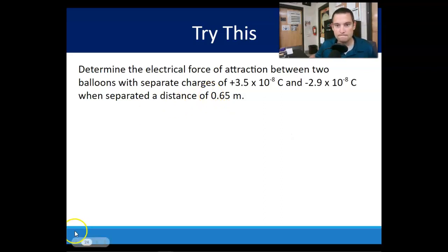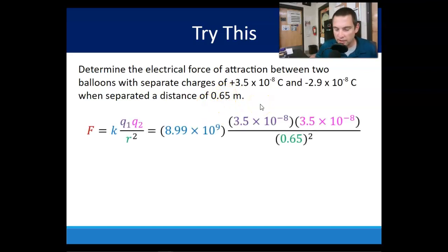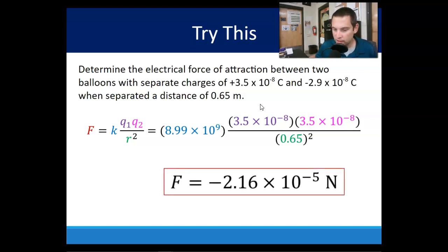Here we go. Pause this video, try this. Determine the electrical force of attraction between two balloons with separate charges of 3.5 times 10 to the negative 8th coulombs and negative 2.9 times 10 to the negative 8th coulombs when separated at a distance of 0.65. First things first, I see this as a positive and a negative, so I'm expecting a negative force because they're going to be attracted to each other. We have a separation distance of 0.65 meters, and that'll be squared, plugging it into the equation. No tricks here, it's just negative 2.16 times 10 to the negative 5 newtons.